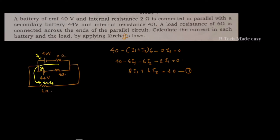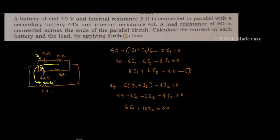For the second battery, applying KVL to the second loop: 44 minus (I1 plus I2) into 6 minus 4I2 equals 0. Expanding: 44 minus 6I1 minus 6I2 minus 4I2 equals 0, which gives the second equation: 6I1 plus 10I2 equals 44.